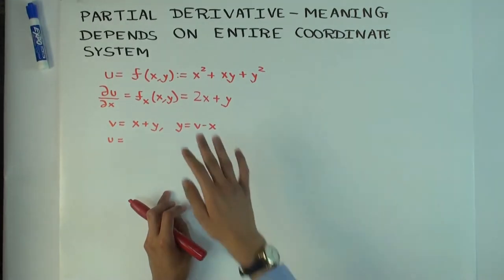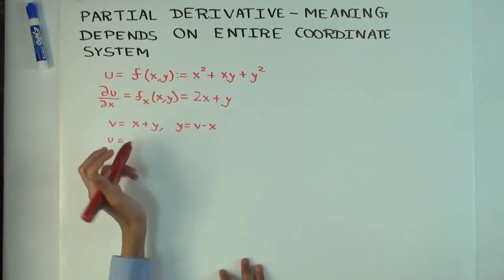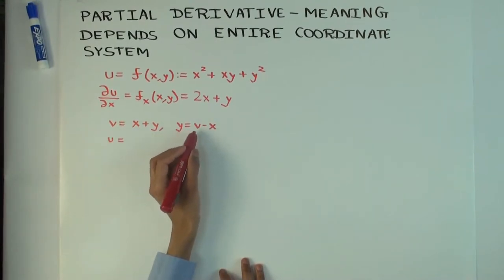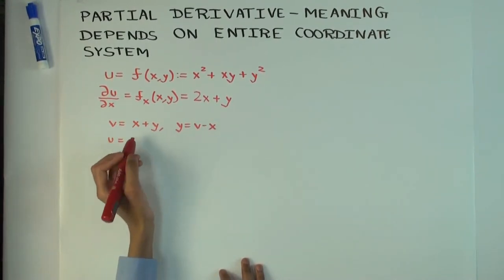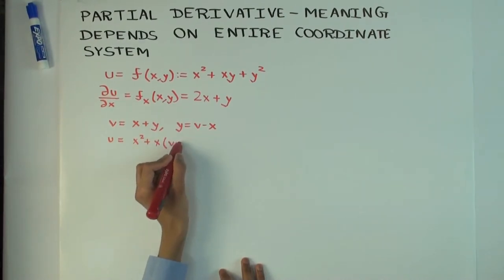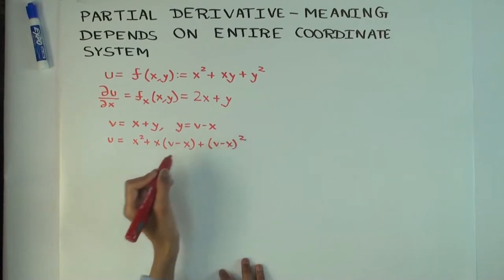Now I want to rethink of this original function as a function of x and a new variable v, which I've defined as x plus y. So y is v minus x, and I want to write u in terms of x and v. So u is going to be x squared plus x times (v minus x) plus (v minus x) squared, whole quantity squared.